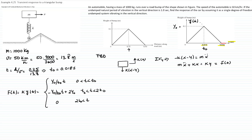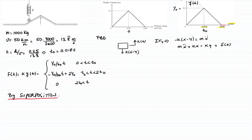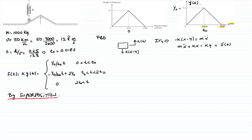To solve this problem, I will use the method of superposition. The idea is to rewrite the forcing function in terms of simpler functions whose responses we already know — specifically ramp functions, which we covered in the theory.